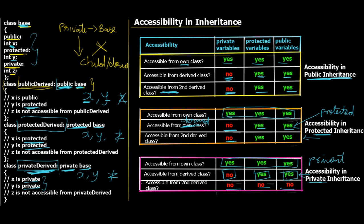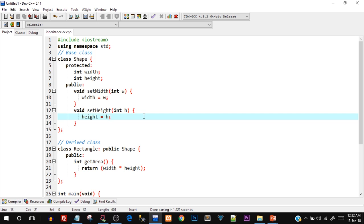Now let's move on to the practical program. Open up your DevC++ IDE — I have already typed in the code to save time. I'll explain it line by line and you can pause and type it out. I strongly recommend that you actually type it out rather than just watching, because that is the best way to practice programming.